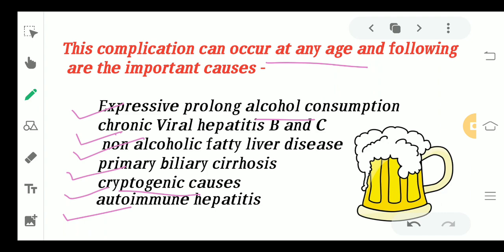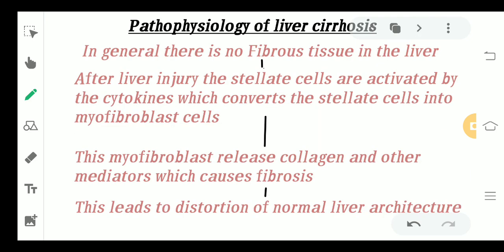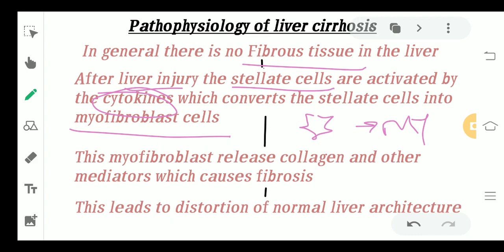Coming to pathophysiology: normally the liver is smooth and glossy with no fibrous tissue or nodules. But if a liver injury occurs, the stellate cells of the liver get converted into myofibroblast cells through the action of cytokines. These myofibroblast cells then release collagen fibers, causing fibrosis in the liver, which leads to distortion of the normal liver architecture.